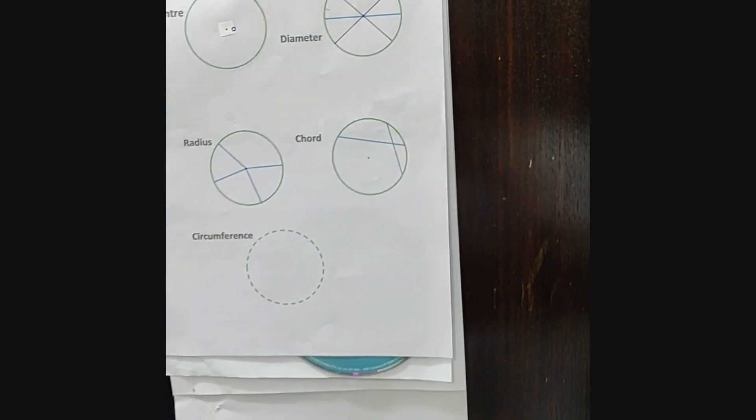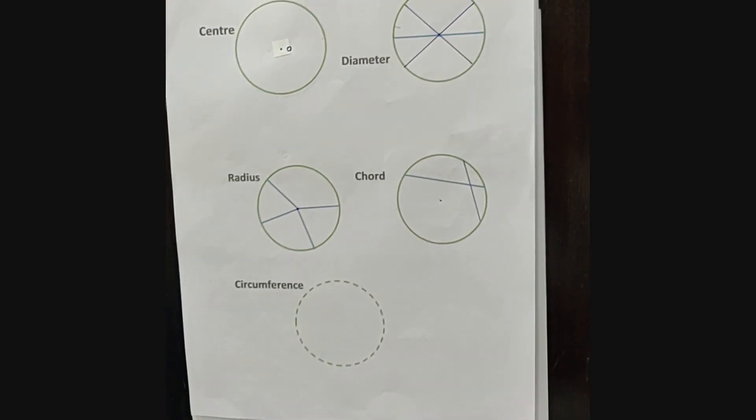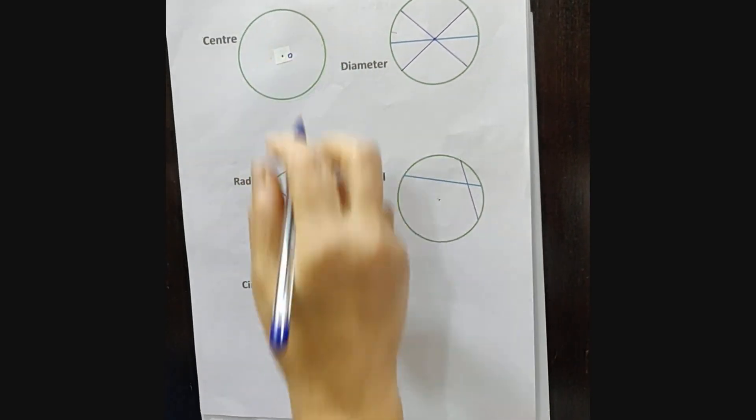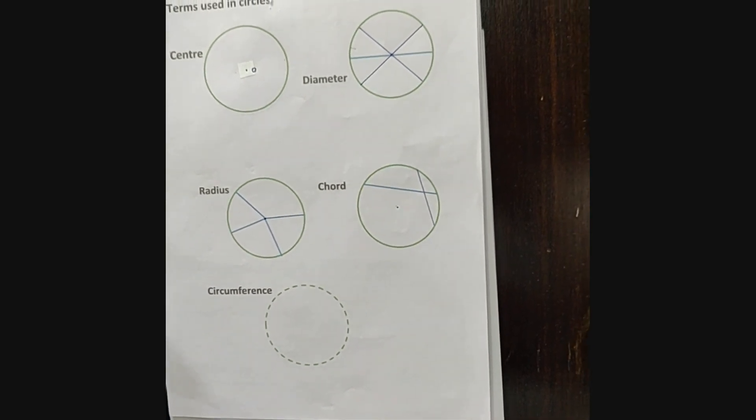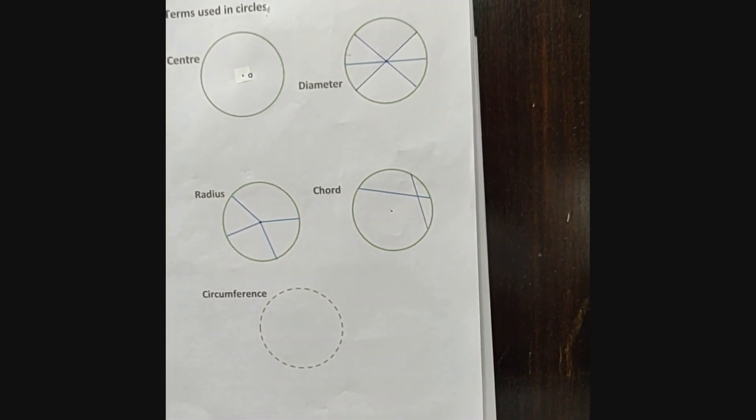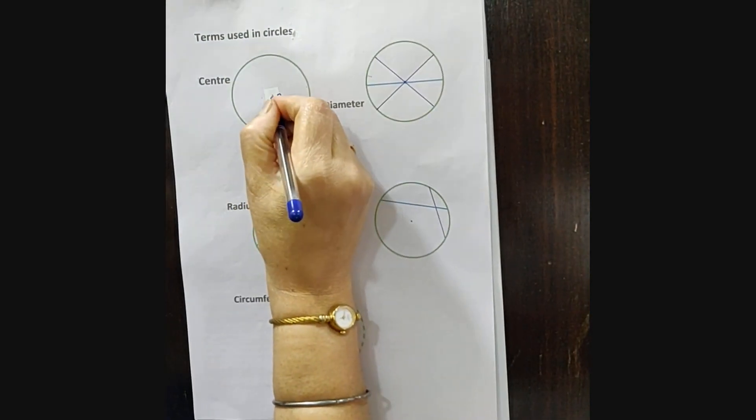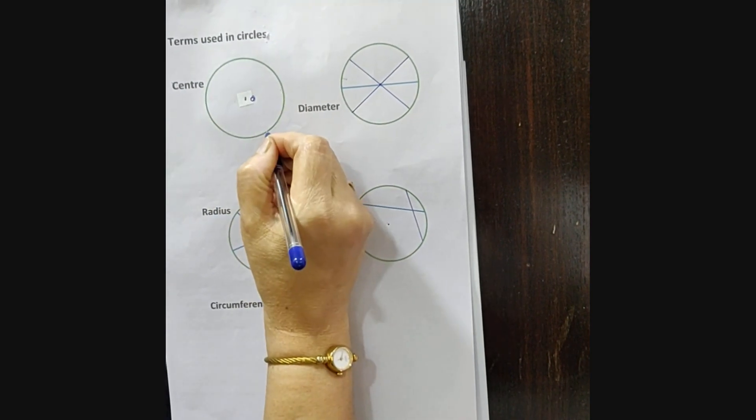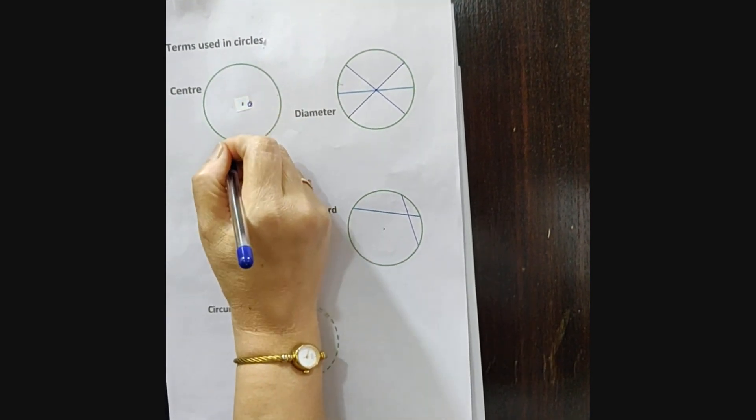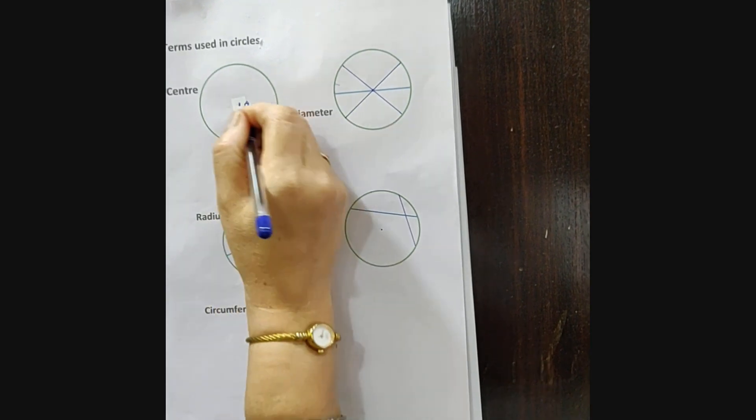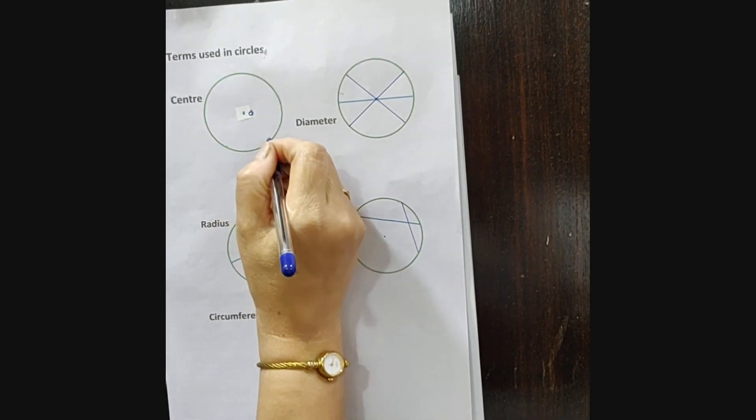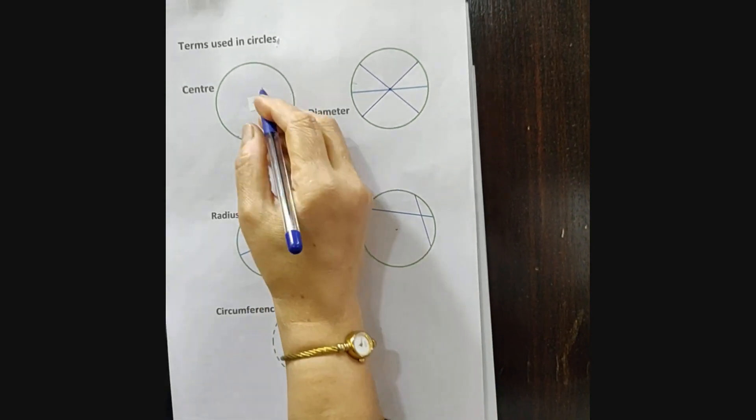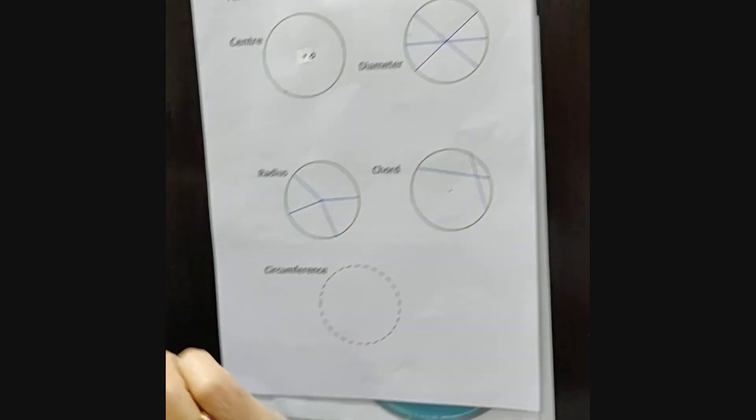Now there are some terms which are used in circles. The center is the point from which you draw a circle. All points from the center to the circle are the same distance. The distance between center and all points on the circle are same because the length of the radius is fixed.